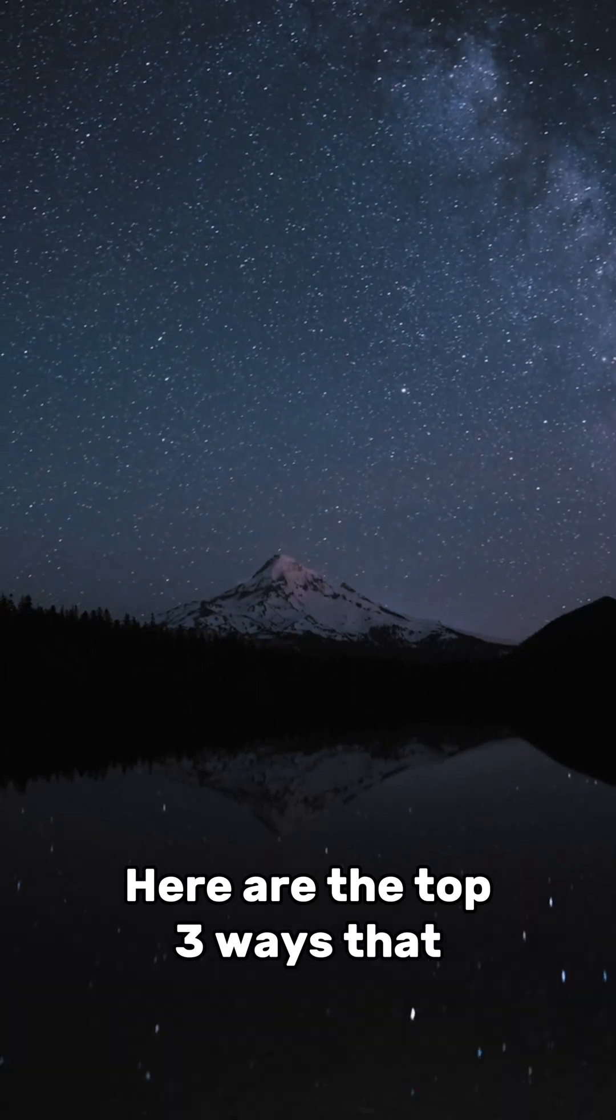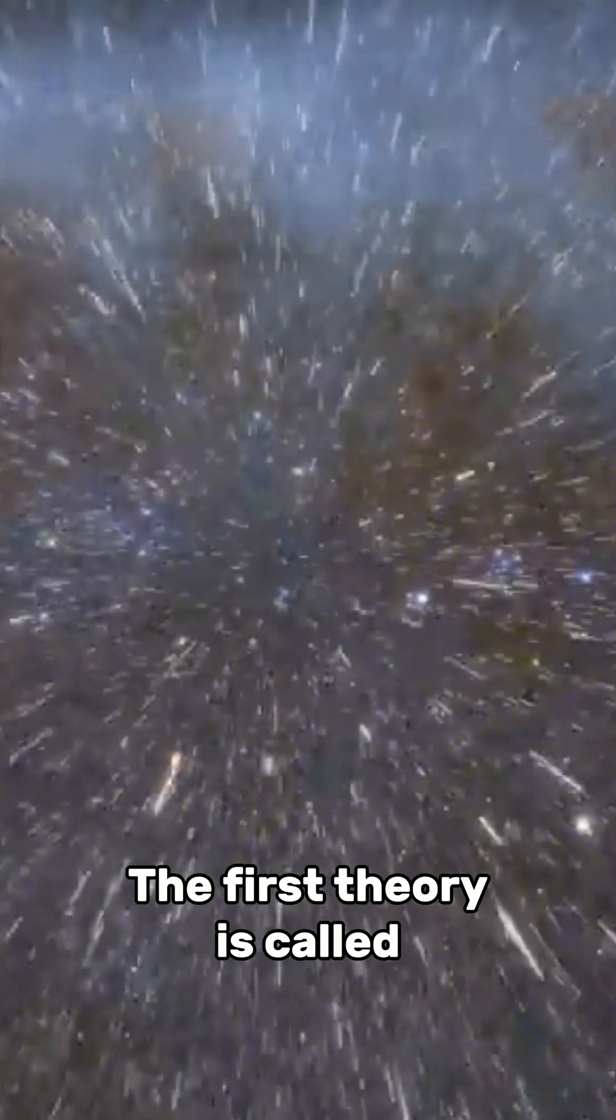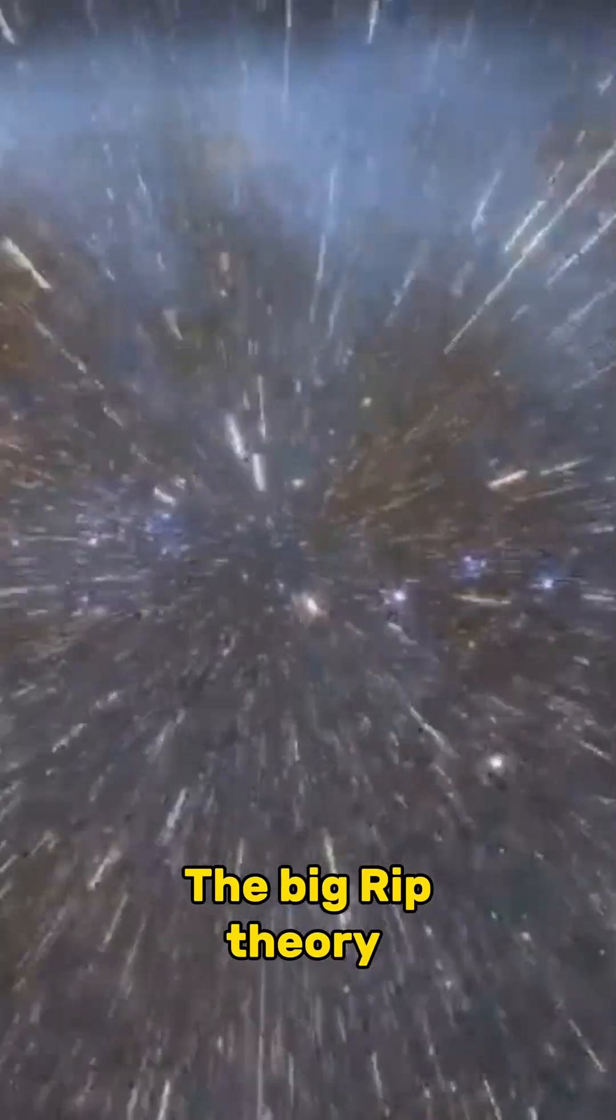Here are the top three ways that our universe could end. The first theory is called the Big Rip Theory.